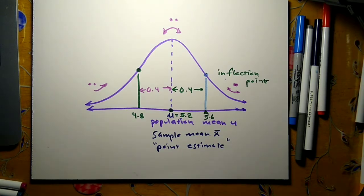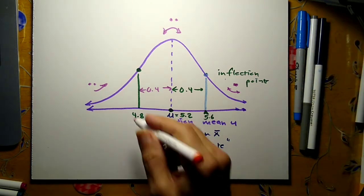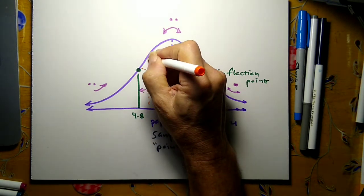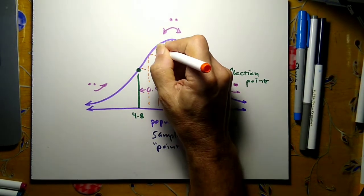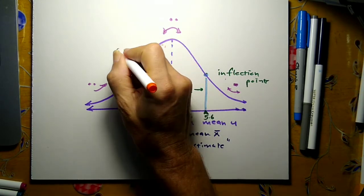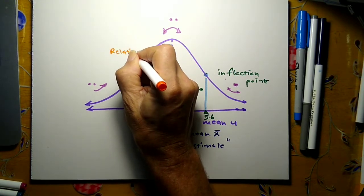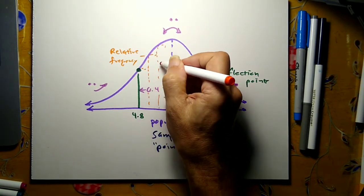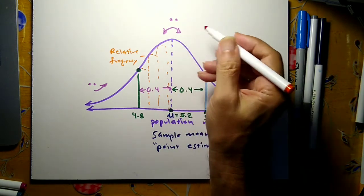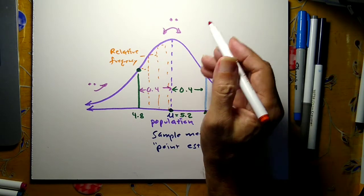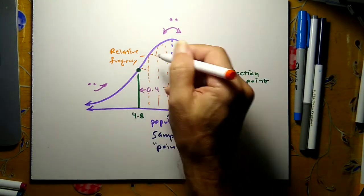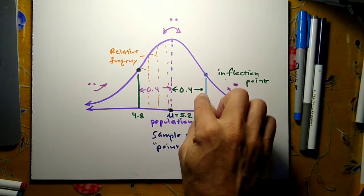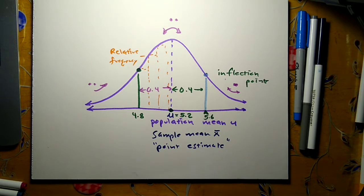Now you might recall that this is really a line chart version of a histogram that had columns. And each column had a height equal to the relative frequency. And when I added these up, they added up to 1, the total probability. That's still true. I no longer have columns, I have a line chart version of the histogram. But if I could add up the columns underneath this curve, they would add up to the probability.